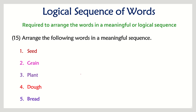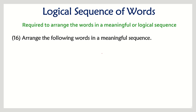Next question: seed, grain, plant, dough, and bread. First is seed — from the seed comes a plant, from the plant we get grain. The grain is ground into flour, from the flour we make dough, and when we bake the dough we get bread. That is the sequence.